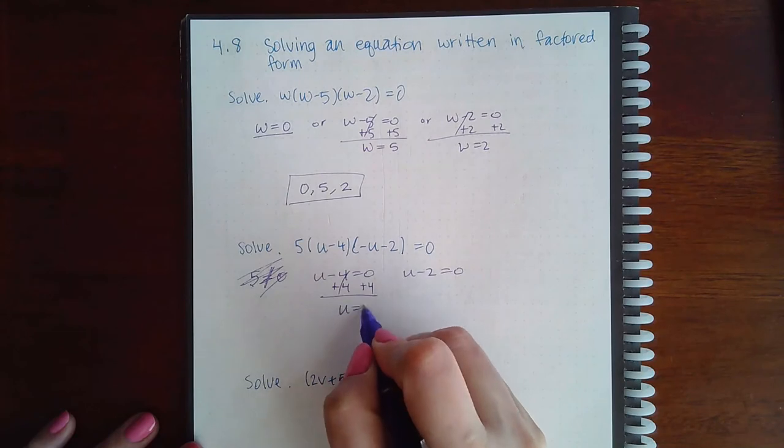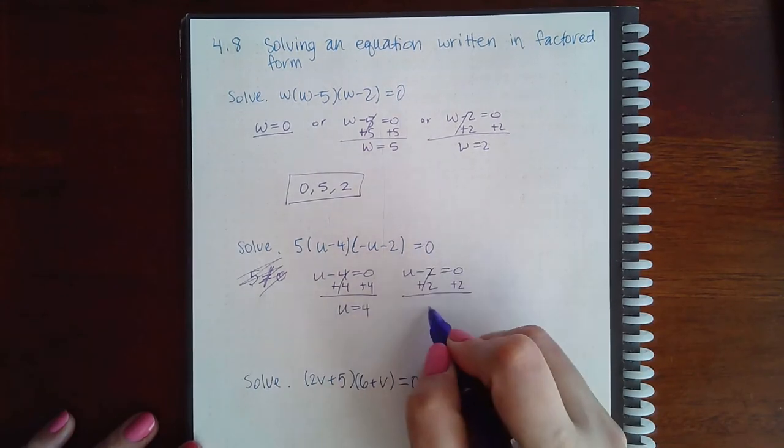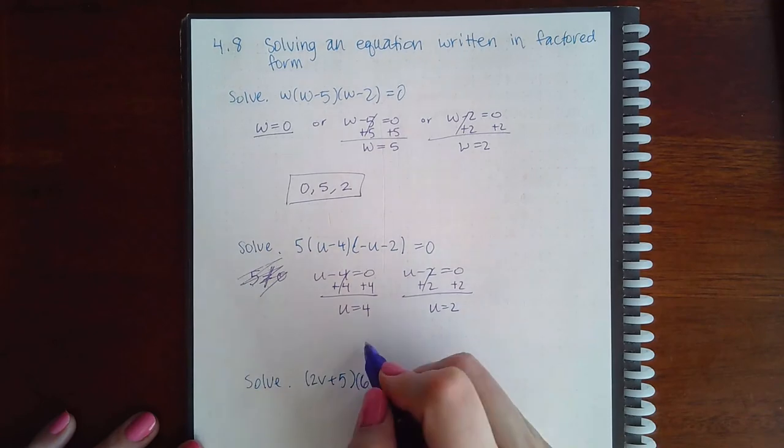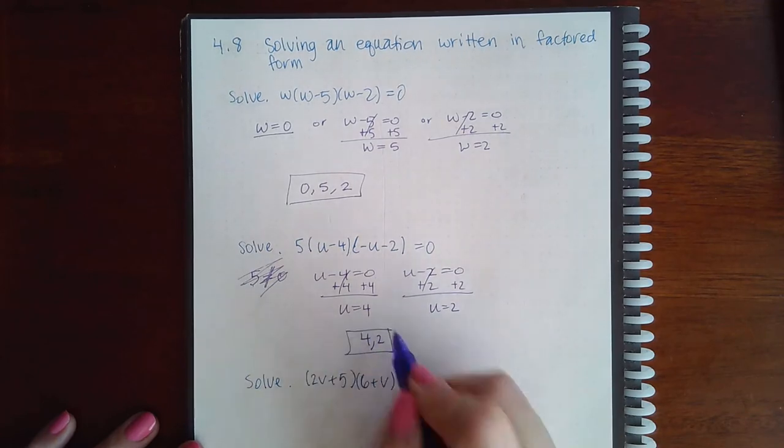you do have two other factors that you can solve for the variable. So we get u equals 4, and u equals 2. And so there are two solutions to this equation.